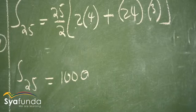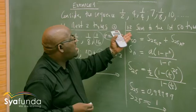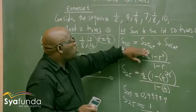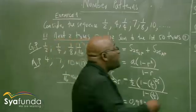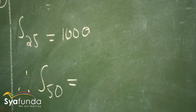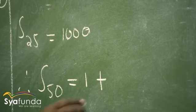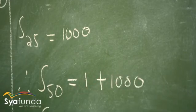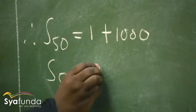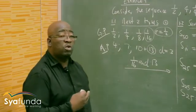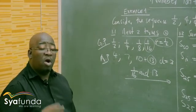The question requires the sum of the first 50 terms. We have 25 terms from the GP giving 1, and 25 terms from the arithmetic progression giving 1000. Therefore, the sum of the first 50 terms = 1 + 1000 = 1001. So 1001 is the sum of the first 50 terms. This is a typical example combining geometric and arithmetic sequences.